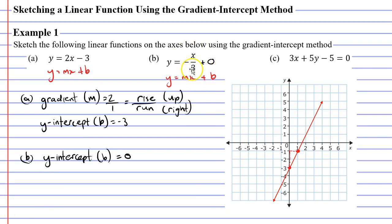What about our gradient this time? Well you might remember that x is the same as writing 1x. So we actually have the fraction negative 1 over 3 in front of x. So our gradient, the symbol for which is m, will be negative 1 over 3.